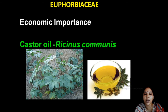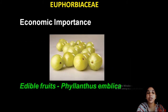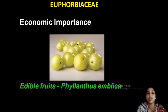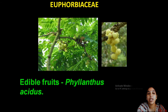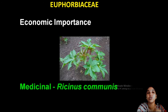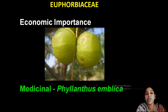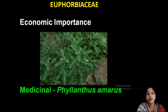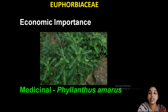Castor oil — avanakana — from Ricinus communis is very important in Ayurveda. Phyllanthus emblica — gooseberry or nellika — is a very important edible fruit, rich in vitamin C, minerals, and is a good antioxidant. Another edible fruit is Phyllanthus acidus. Medicinal plants include Ricinus communis and Phyllanthus emblica. Phyllanthus amarus — kidar nelli — is used to treat jaundice.